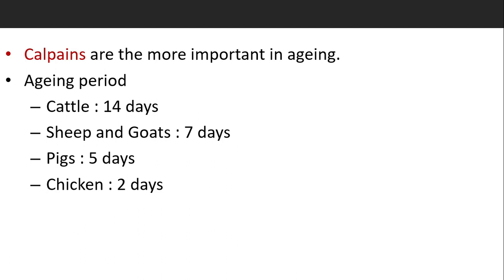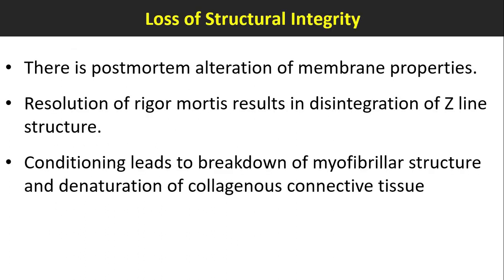Calpains are calcium-activated sarcoplasmic factors activated by calcium ions, higher pH, and temperature. Calpains cause proteolysis of cytoskeletal proteins and are the more important enzymes in aging. Aging periods: cattle, 40 days; sheep and goat, 7 days; pigs, 5 days; chicken, 2 days.